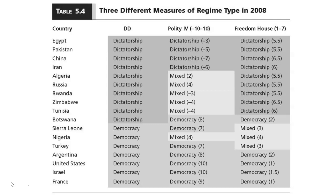Botswana is the most interesting case — it comes out as a dictatorship on the DD measure and a democracy on the other two. Botswana is a mineral-rich, diamond-producing country and one of the most consistently economically growing countries for the past 30 years. But it has always been ruled by the same party, and that's where DD comes into play — there has never been a peaceful alternation of power. Although elections look pretty free and fair, there's free speech, political dissenters are not repressed, and multiple parties run. The same party has just won for 40 years in a row, so we don't really know if they would willingly give up power. For that reason, Botswana does not meet the fourth DD criterion and is classified as a dictatorship, even though on the surface it looks like a relatively free country.